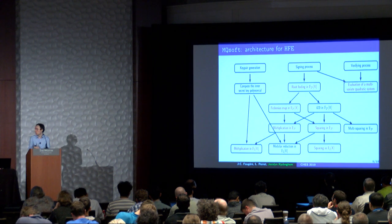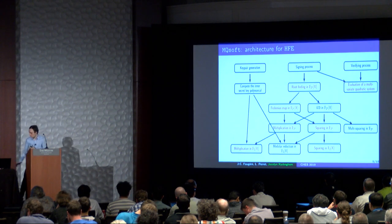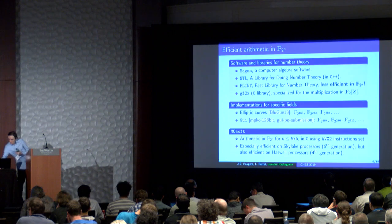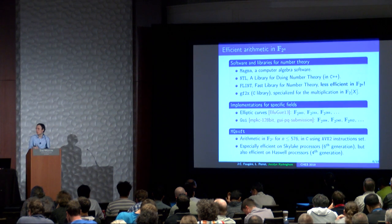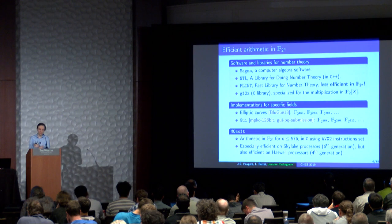Finally, for the verifying process, the main part is just to evaluate a multivariate quadratic system. The arithmetic is an important part of the signing and key generation process.